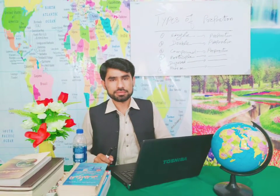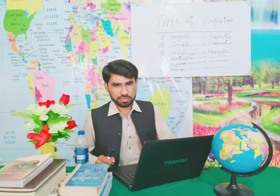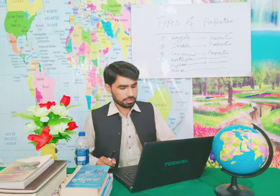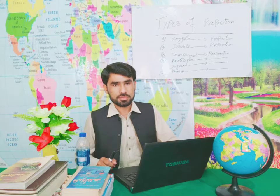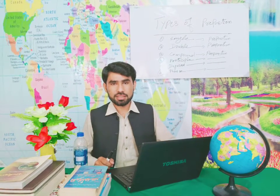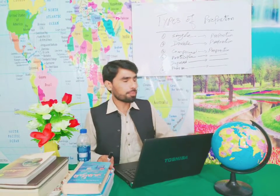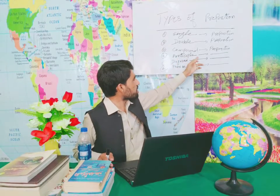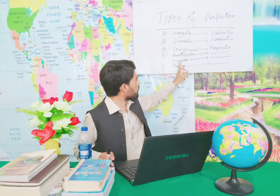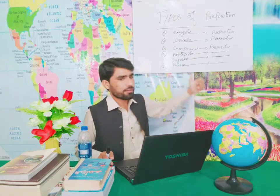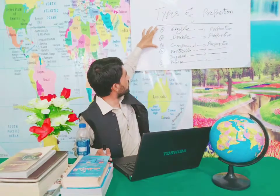So, if you know, there are total six types of prepositions in English grammar. The first is simple preposition, or single preposition. The second is double preposition, the third is compound preposition, the fourth is participle preposition, the fifth is disguised preposition, and the sixth is phrase preposition.